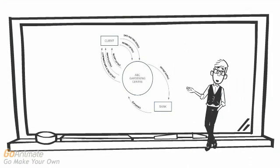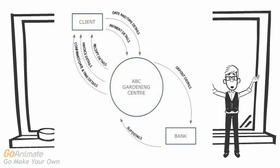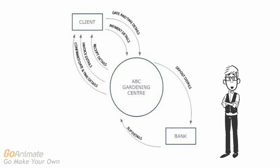Here is an example of a finished context diagram. You can see it has two entities: Client and Bank. The system boundary is stated as the ABC Gardening Center. The client calls and makes a date and time with ABC Gardening Center. This is then confirmed.